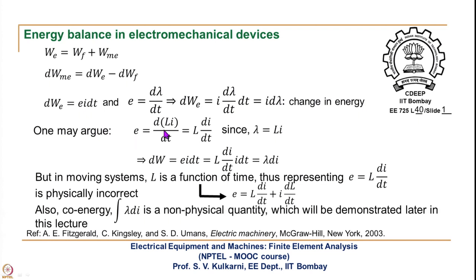One may argue that E equals d(LI)/dt, which can be written as L·dI/dt if L is assumed constant, since lambda equals L·I. Substituting, DW becomes L·dI/dt · I·dt, giving lambda·dI. So we are getting two expressions: one is I·d(lambda), and another is lambda·dI.